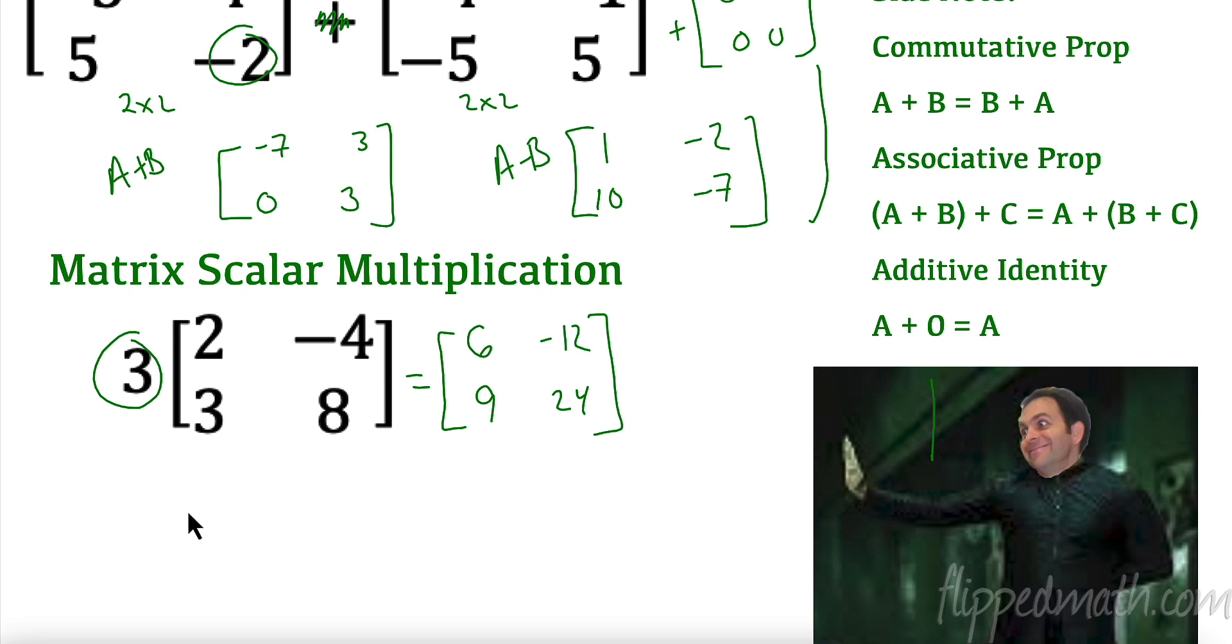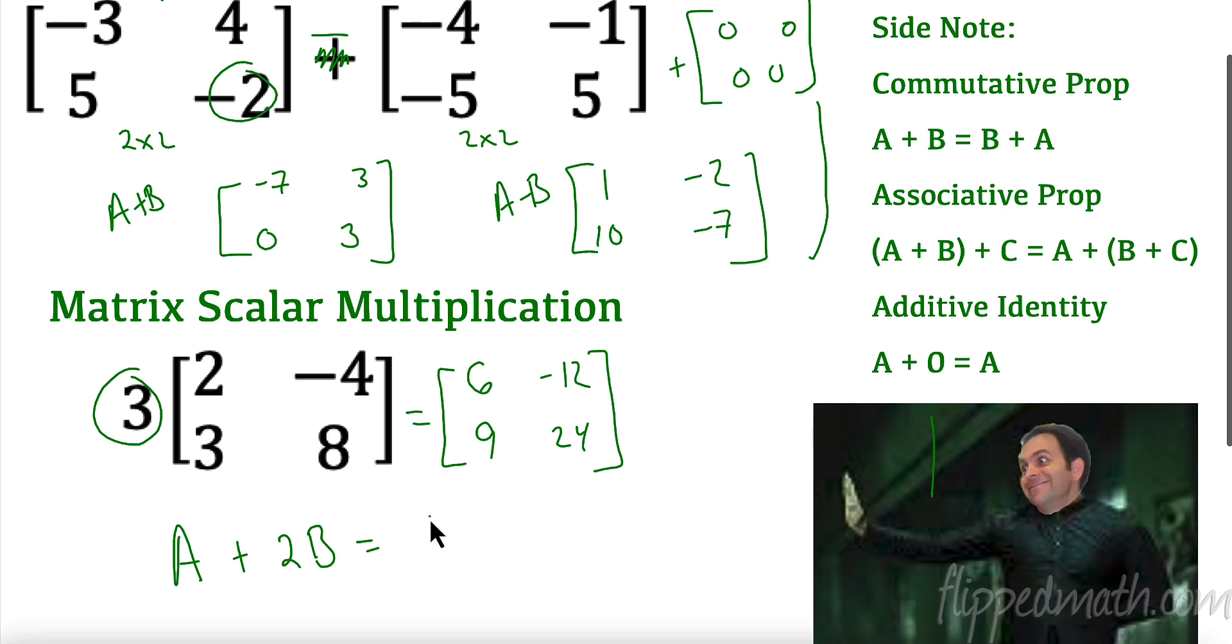Now obviously you could get a little tricky. Maybe I did A plus 2B, right? That would mean I would have to multiply it. I would add my A, negative 3, 4, 5, negative 2, plus scale my B matrix first, and then add them together. So order of operations pertains here. Scalar multiplication would come first, then I would add those together.